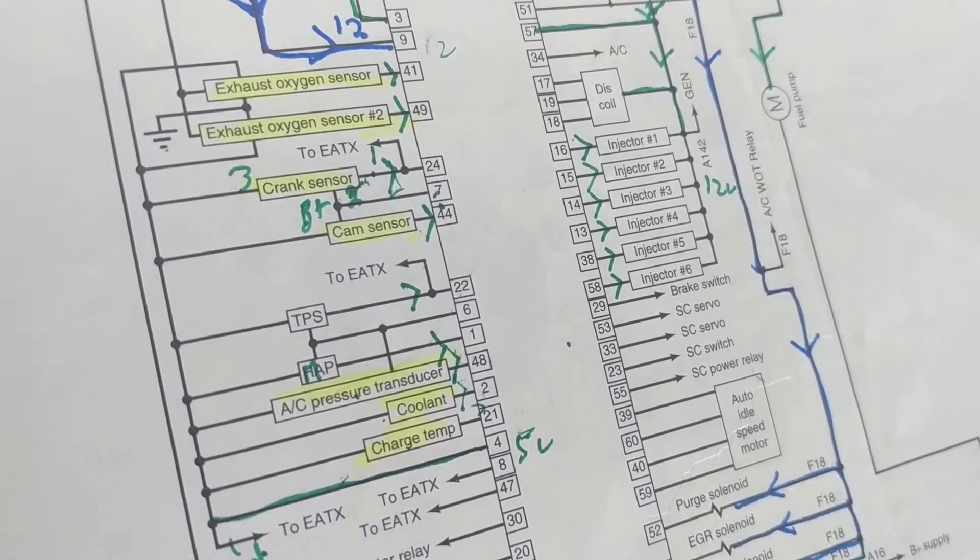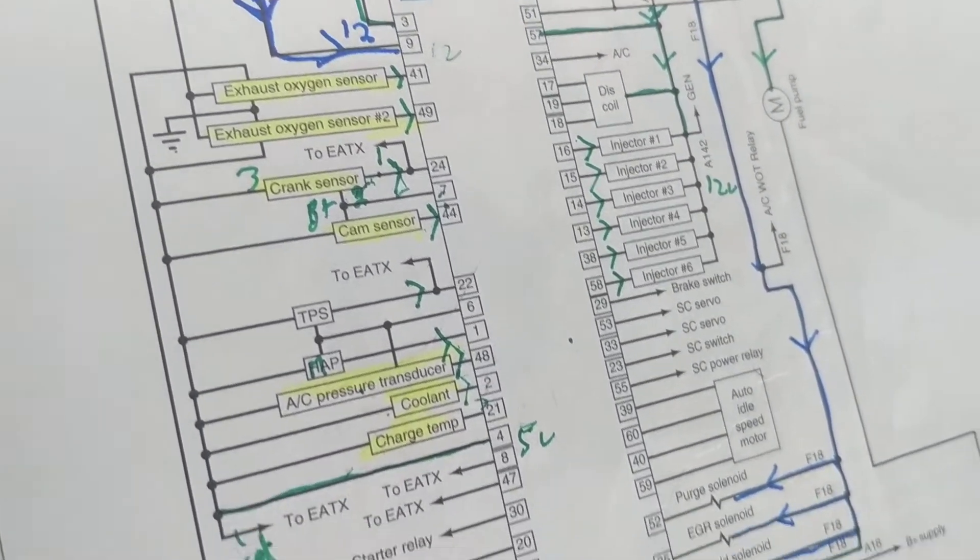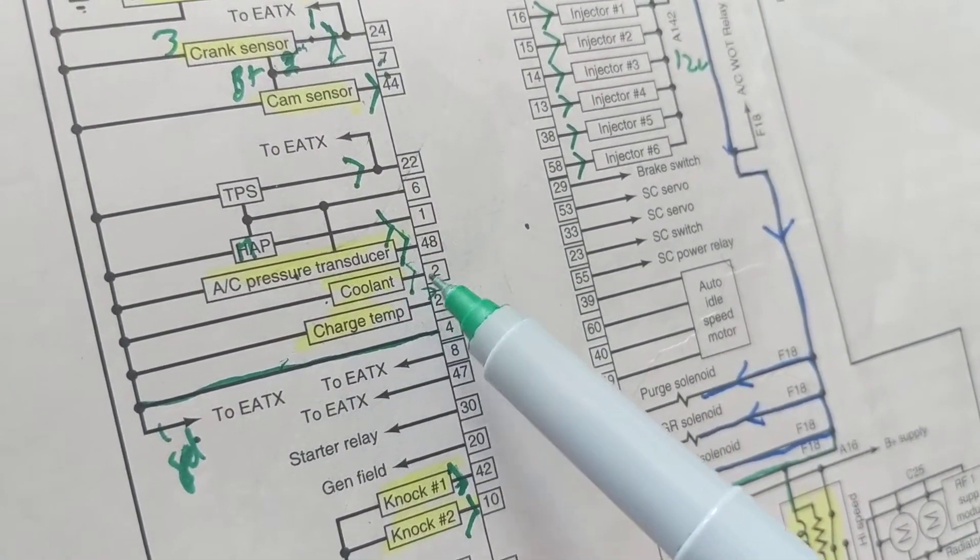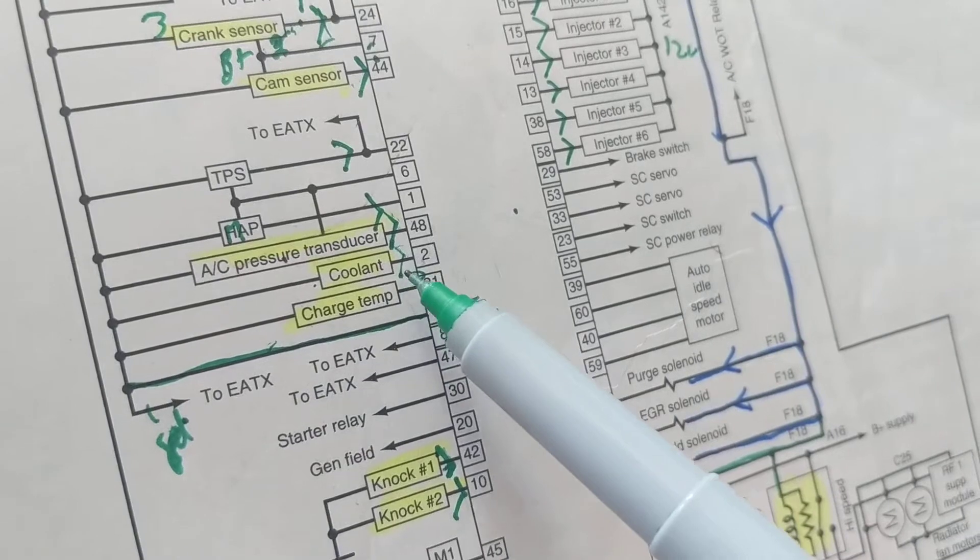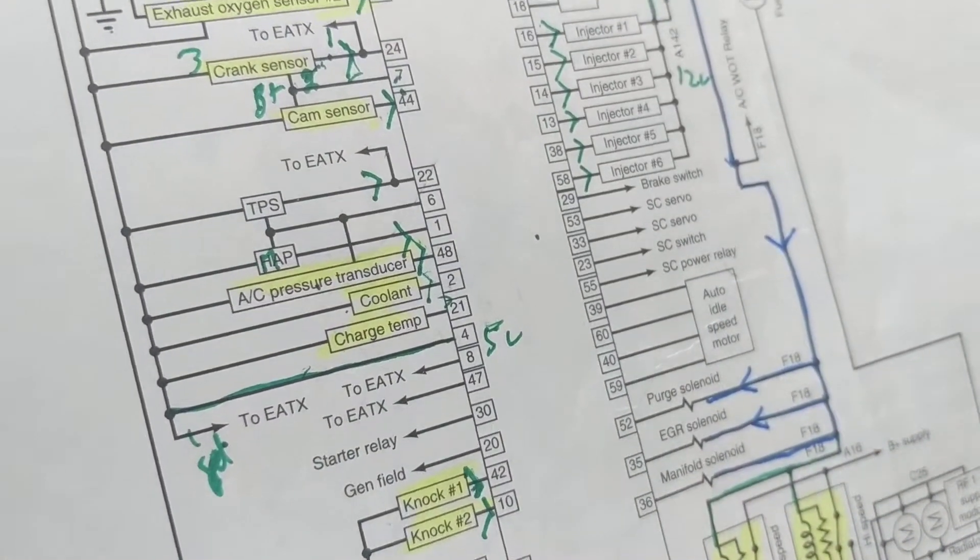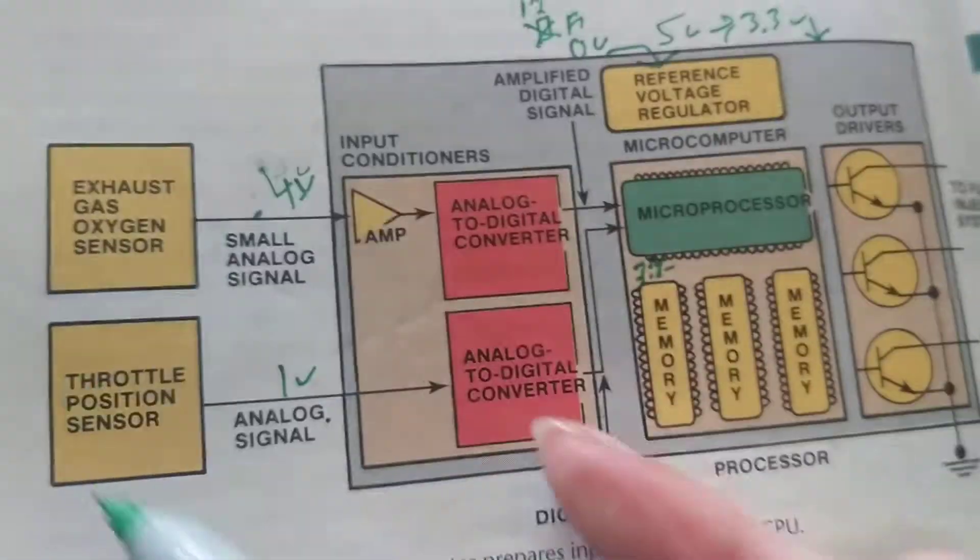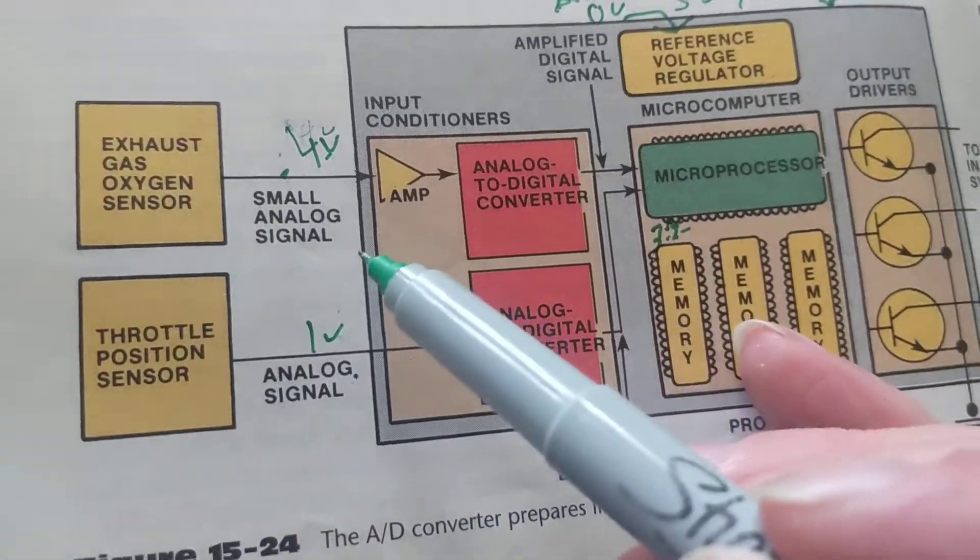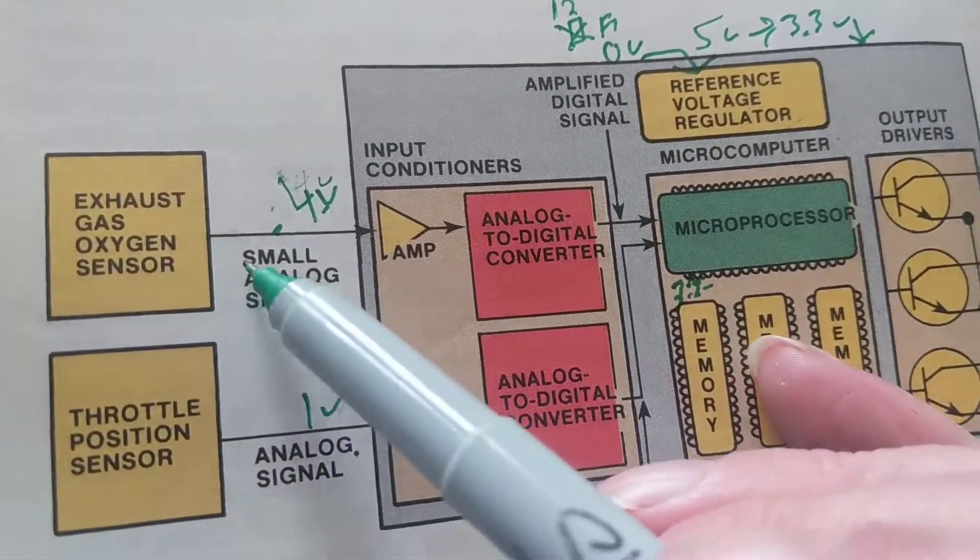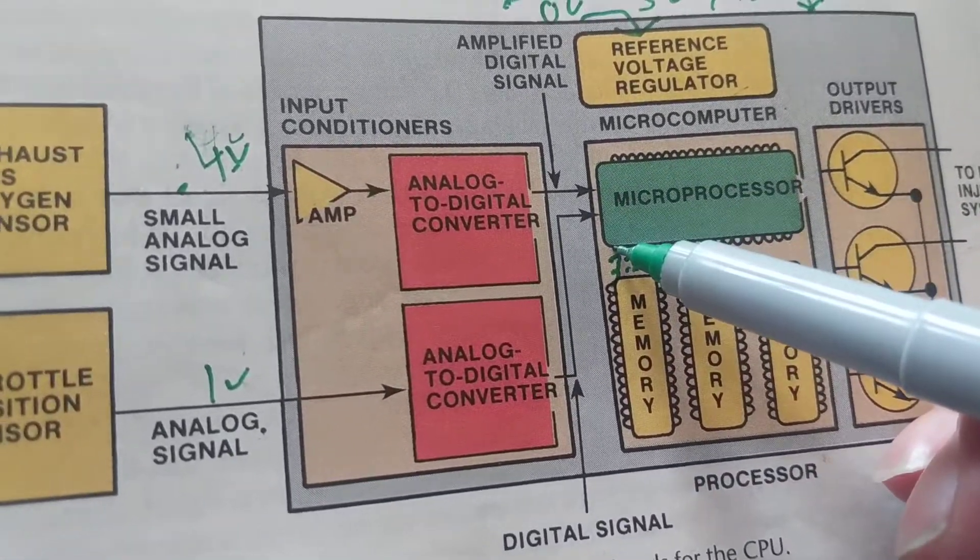Now when you see a coolant temperature sensor going to pin 2 or whatever, you know it is an input because it is a sensor. Where do we know it from? From this layout. Anything giving information is analog going to digital, and it goes to right here, the microprocessor.